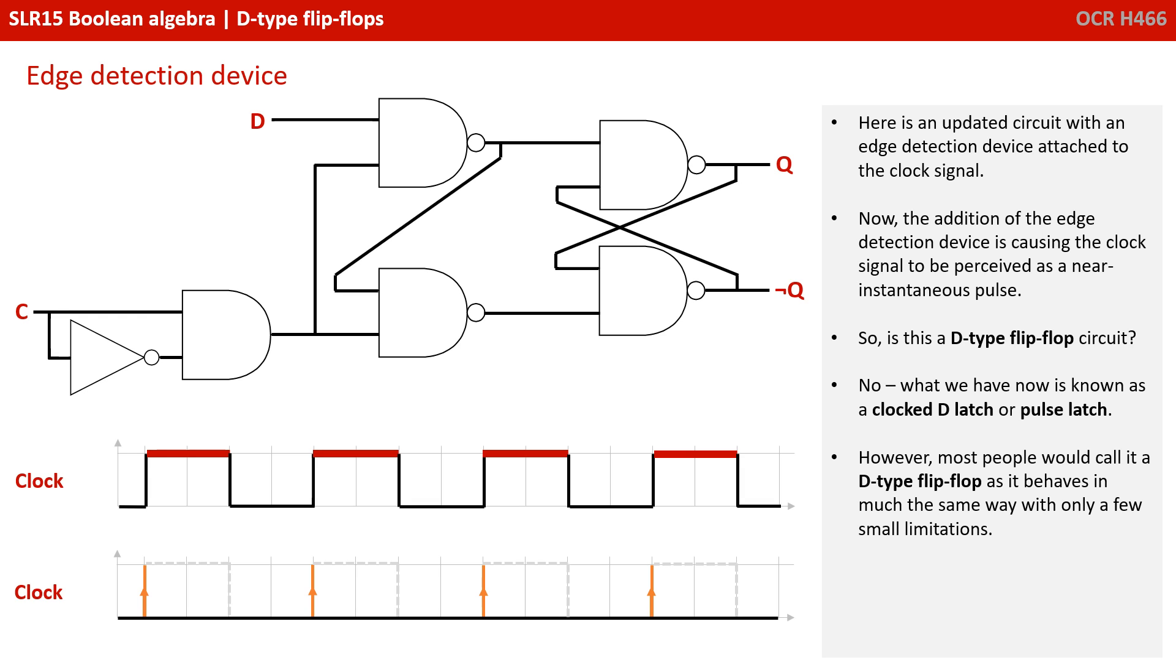Here's an updated circuit with an edge detection device attached to the clock signal. The addition of the edge detection device is causing the clock signal to be perceived as a near instantaneous pulse. So this is a D-type flip-flop circuit then? Well, no! What we have now is known as a clocked D-latch or pulse latch. However, most people would call it a D-type flip-flop as it behaves in much the same way with only a few small limitations.